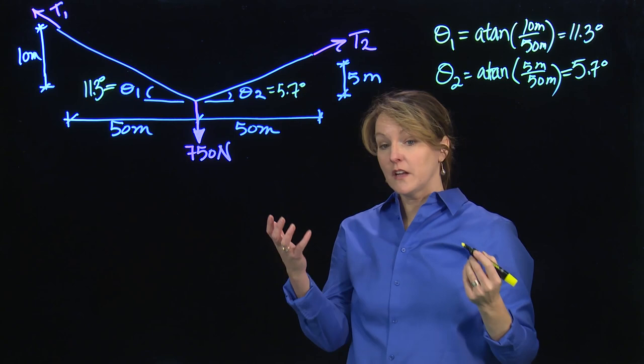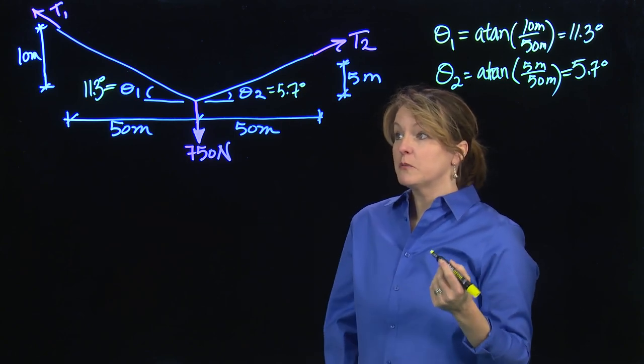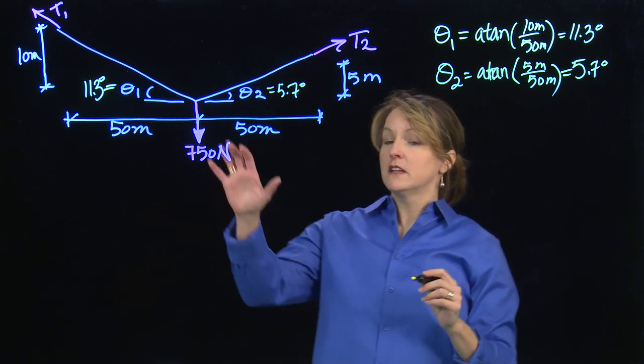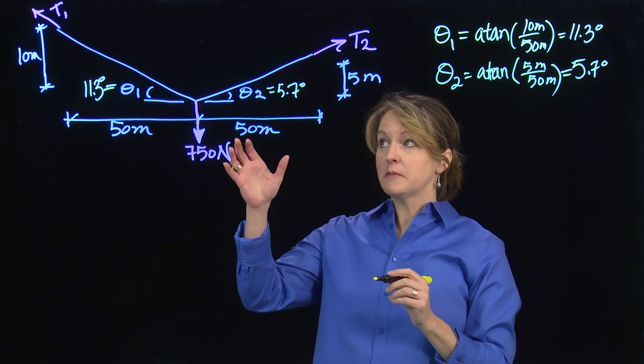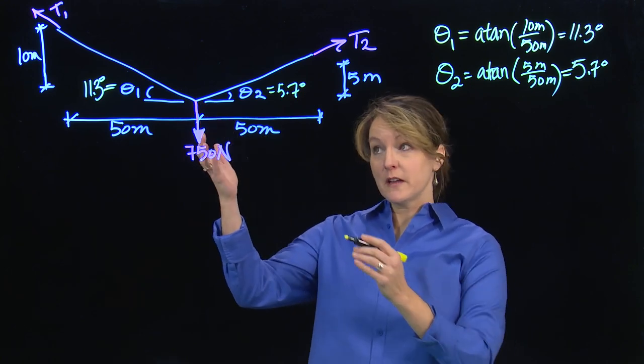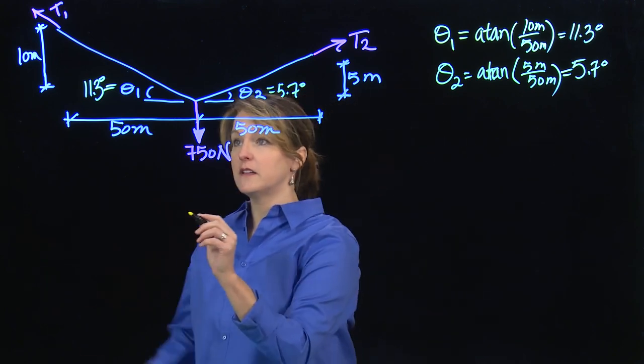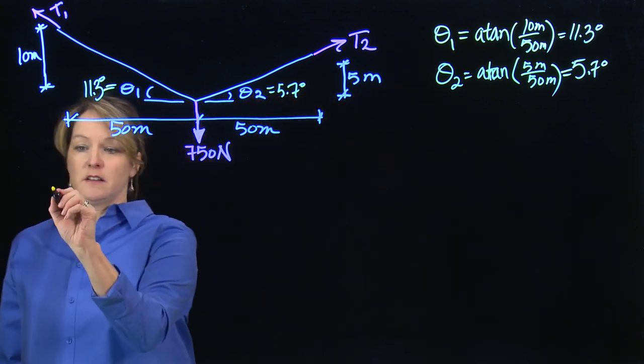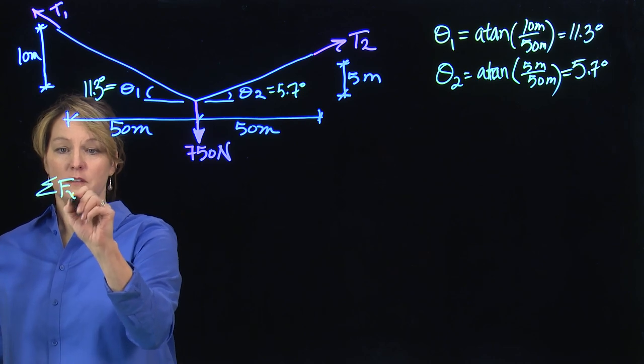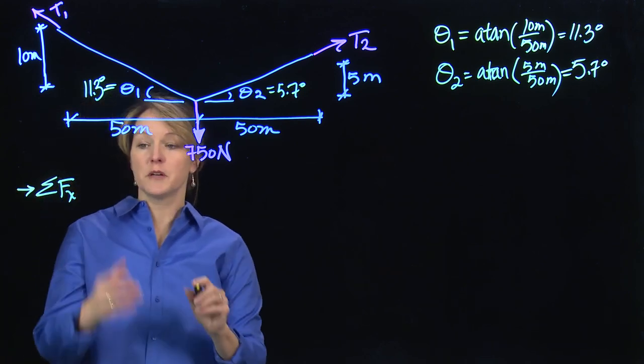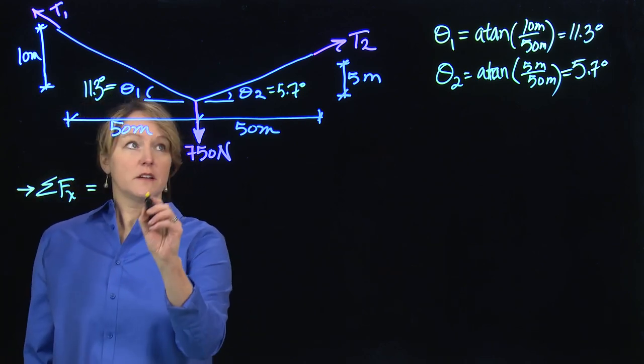So that geometry is just going to help me when I do my equilibrium, which is what I'm going to do next. So first I'm going to do horizontal equilibrium. In some of the previous examples we've found that the tension force on either side was the same, that was when the angles were the same. In this case we have two different angles.